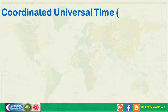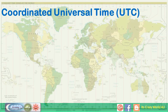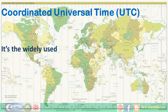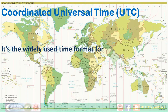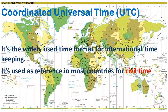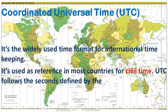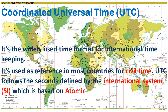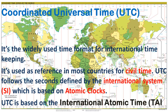Coordinated Universal Time, UTC. It's the widely used time format for international timekeeping and is used as a reference in most countries for civil time. UTC follows the seconds defined by the International System, SI, which is based on atomic clocks. UTC is based on TAI.